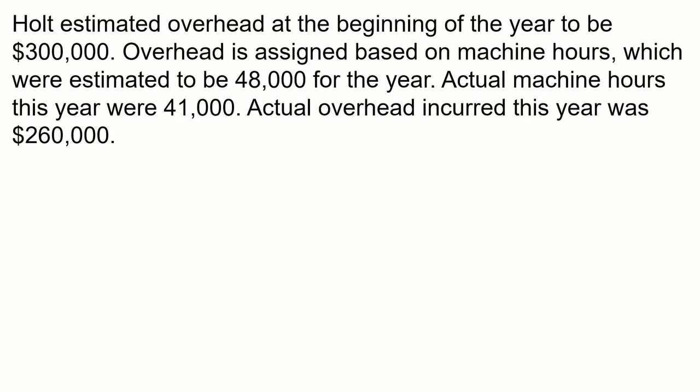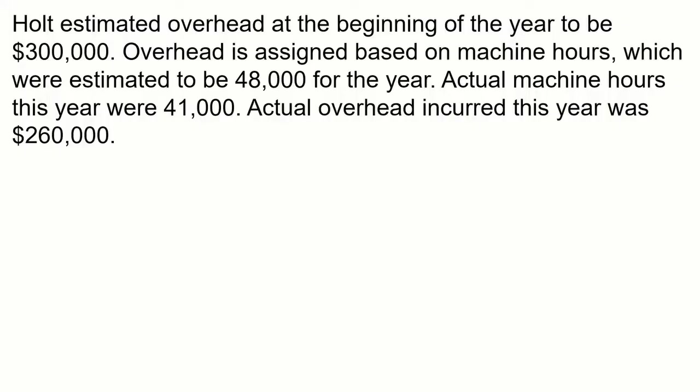Holt estimated overhead at the beginning of the year to be $300,000. Overhead is assigned based on machine hours, estimated at 48,000 for the year. Actual machine hours this year were 41,000 and actual overhead incurred was $260,000. So we have the actual numbers, the budgeted numbers, budgeted machine hours, and actual machine hours — all of which will be used going forward.